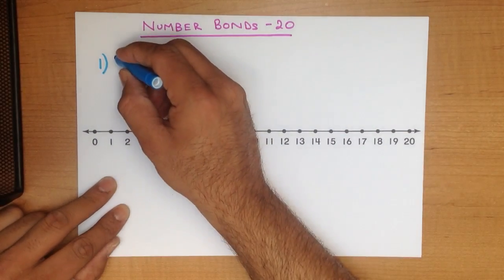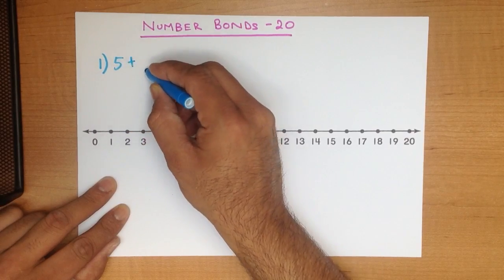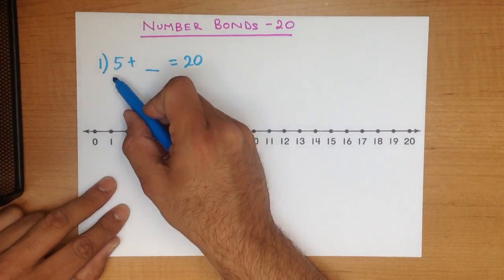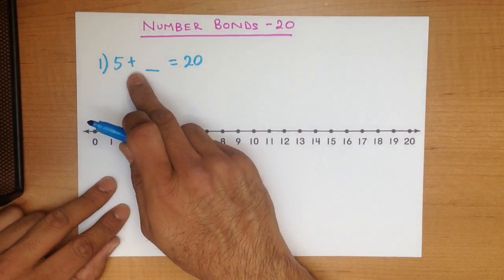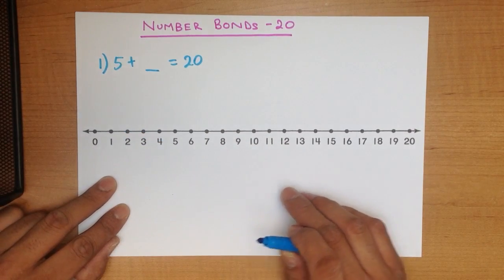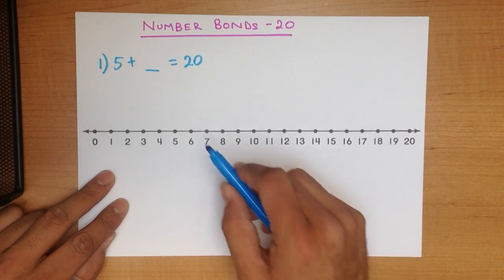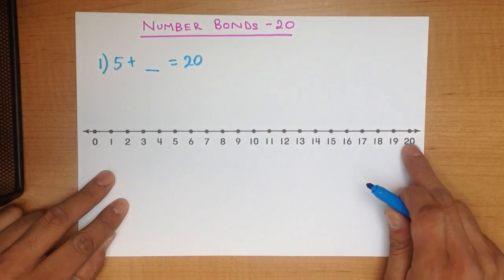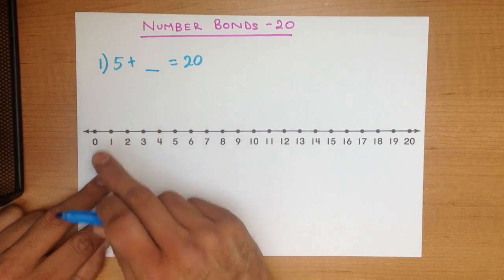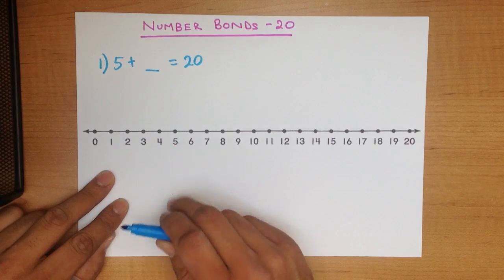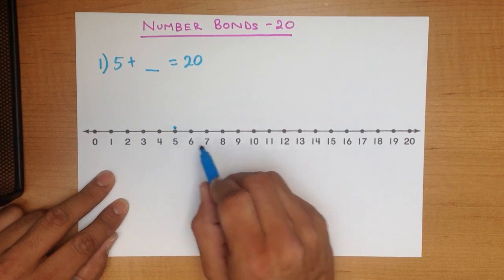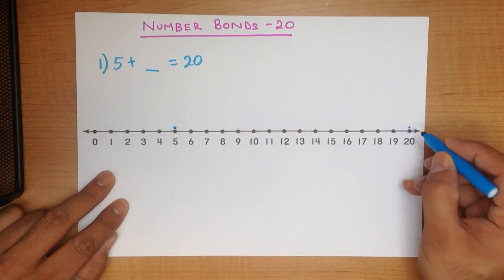What is something added to 5 that gives 20? We've got 5 plus something equals 20. So how do we use the number line? 20 is where we have to finish. 5 is the number that's given to us, so that is where we start. So we start at number 5. Let's put a little dot over here. We're starting at 5 and we have to finish all the way at 20.